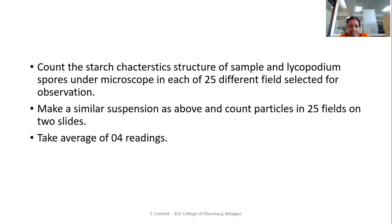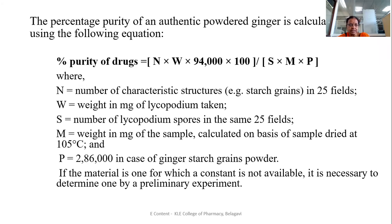Make a similar suspension and count particles in 25 fields on two additional slides. Take the average of four readings — two slides from the first preparation and two from the second. This average is then used to calculate the percentage purity of the drug.